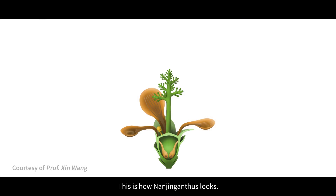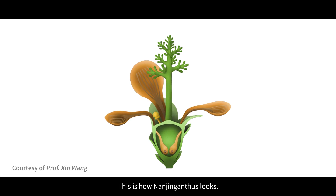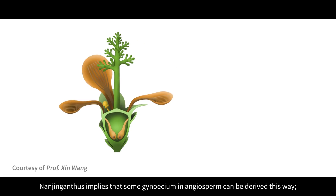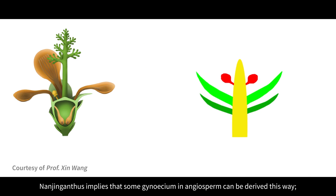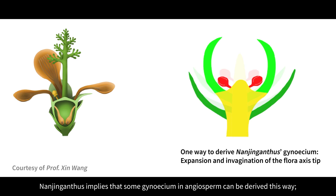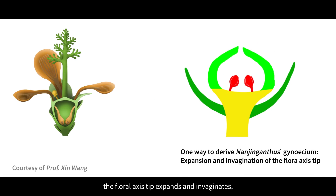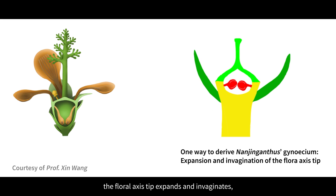This is how Nanjinganthus looks. Nanjinganthus implies that some gynoecium in angiosperms can be derived this way: the floral axis tip expands and invaginates, and thus fulfills the ovule enclosing.